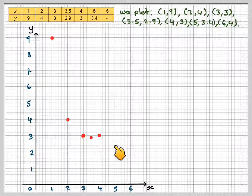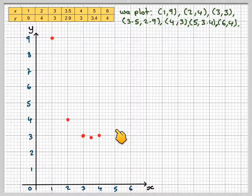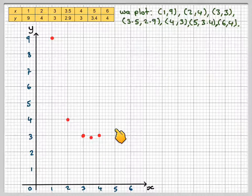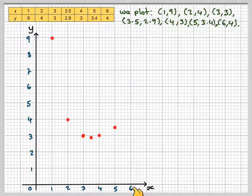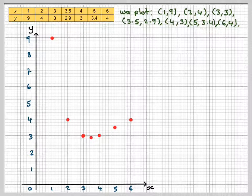Then (5,3.4). That's 3.2, that's 3.4. One of these little squares is going to be 0.2, so it's a good idea to work out what they're worth. Then (6,4), which is that point there.